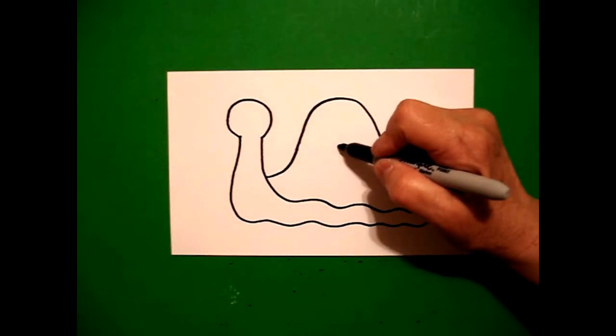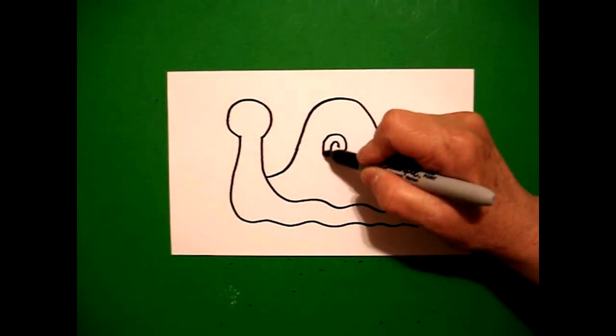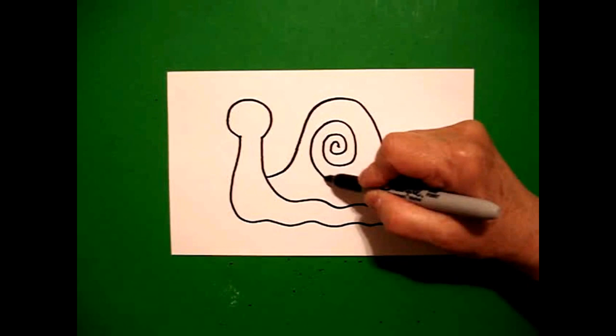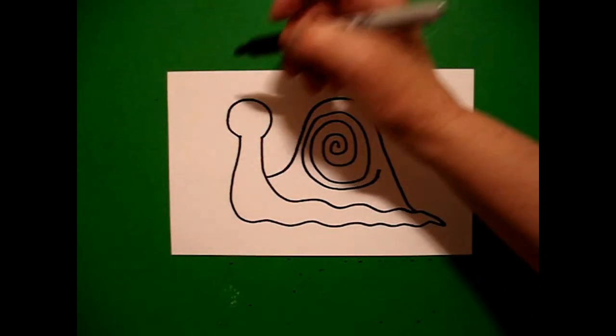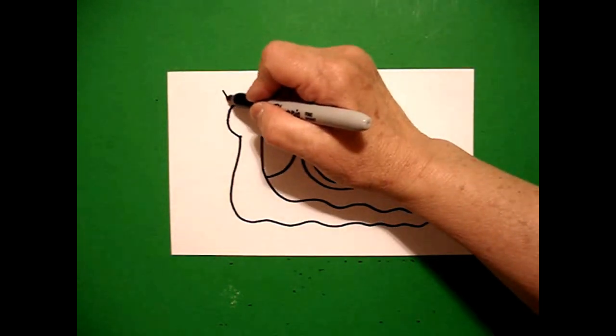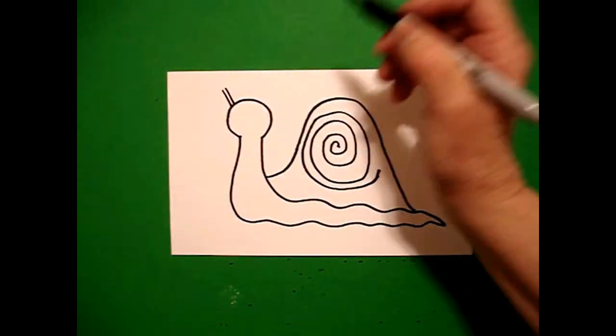And right here in the center, I put a dot and then I draw a spiral all the way around, as far as I can let it go. I come back over to the left and I draw one, two straight lines.